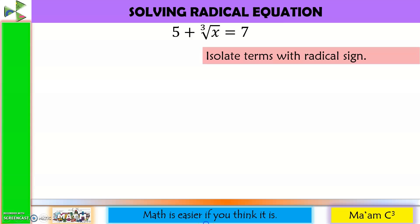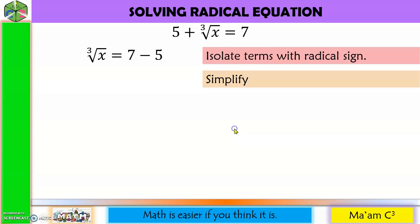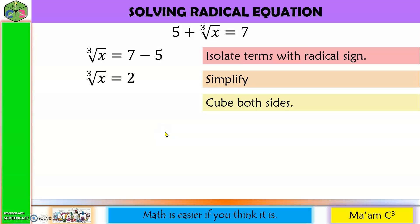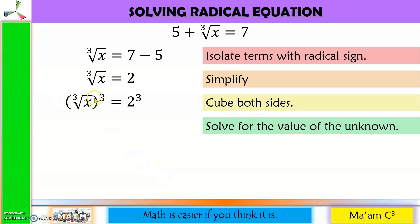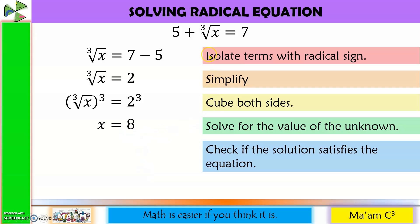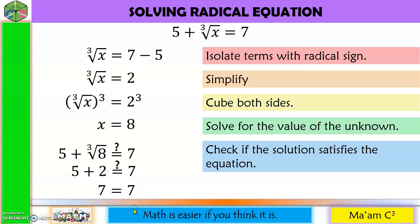Let's have another example. First step: isolate the radical — move 5 to the other side; it becomes negative. Simplify: 7 minus 5 equals 2. This time we cube both sides, because the index is 3. The index 3 and exponent 3 cancel out, giving x. And 2 cubed equals 8. Checking: substitute 8 in the original equation — cube root of 8 is 2, and 5 plus 2 is 7. So x equals 8 is the solution.